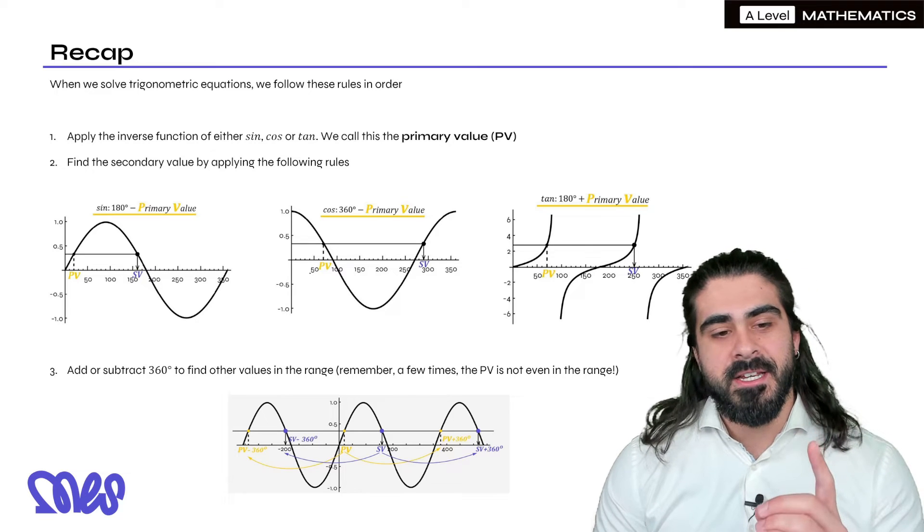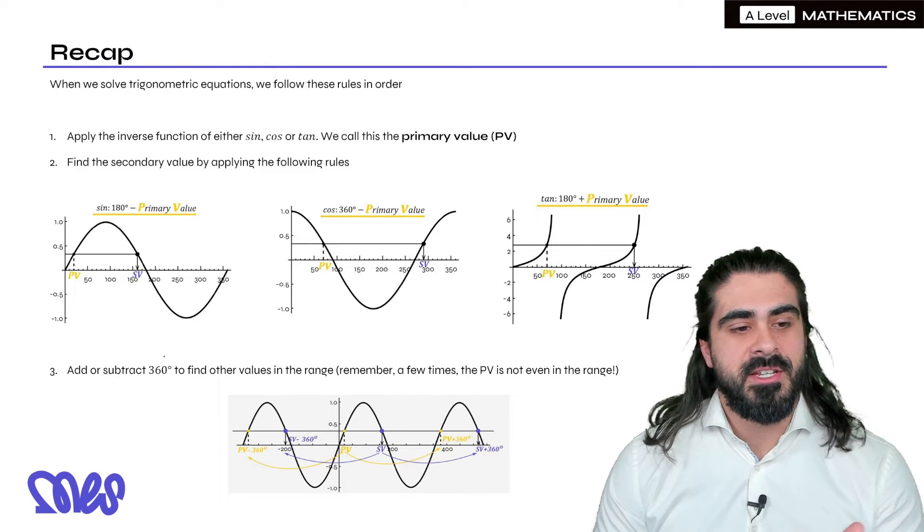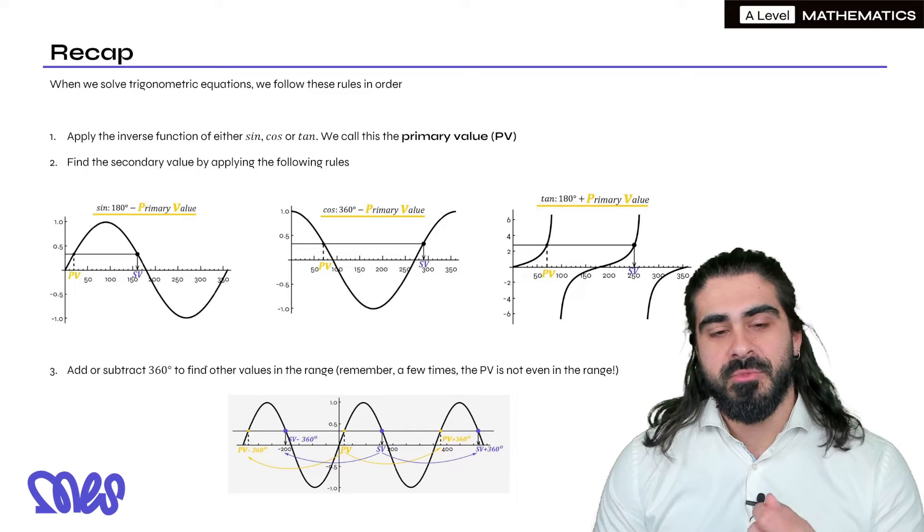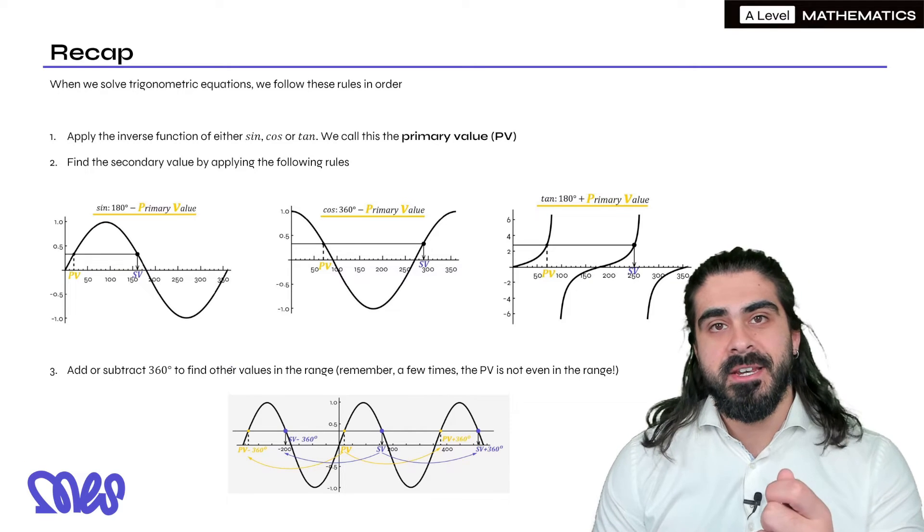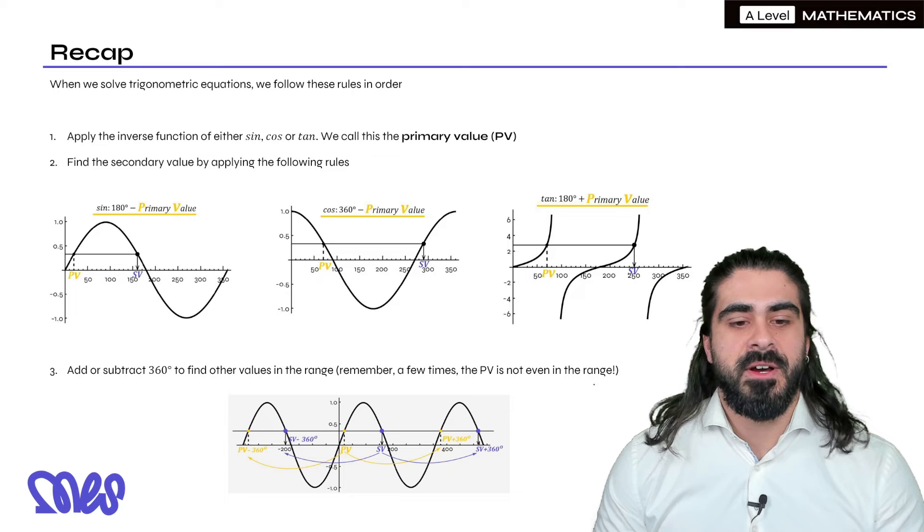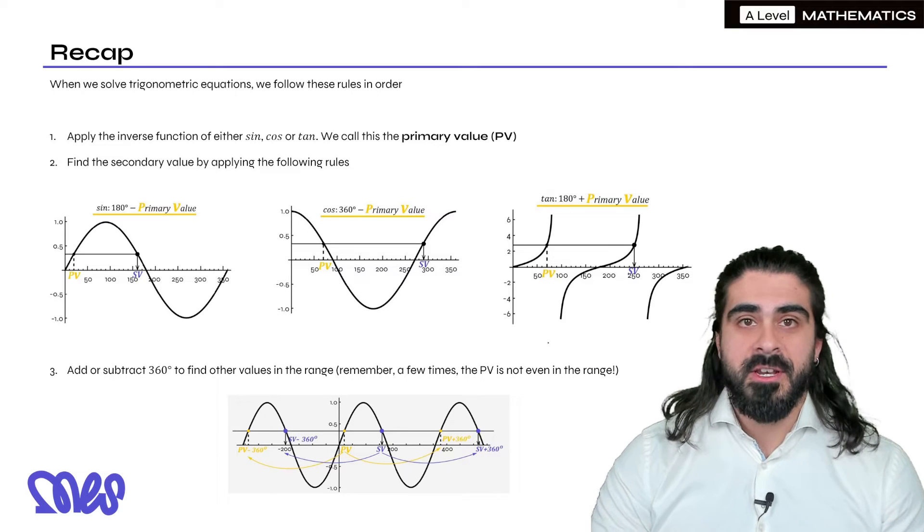Now once you've done the PV and SV, remember the graphs cycle every 360. So all you do is you add or subtract 360 from your PV and SV to find other values in the range. Now what are we going to do today?